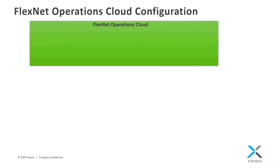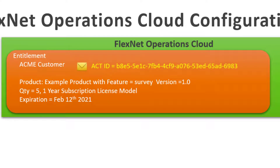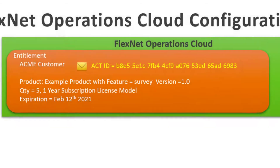As a refresher, in the previous video I covered the FlexNet Operations cloud configuration required to run the licensing examples. An entitlement was created for the Acme customer account for an example product that contained one licensed feature called survey version 1.0. The account was entitled to a quantity of five licenses with a one-year subscription license model. In this example, the license expiration is February 12, 2021. An activation ID was automatically generated that will be used in the license activation process.